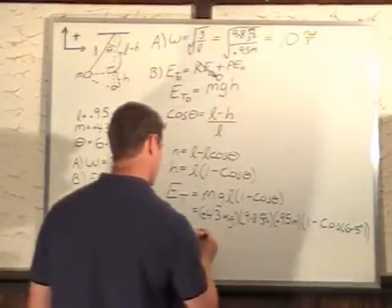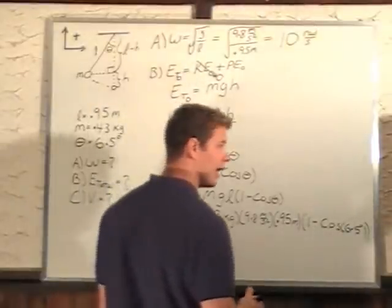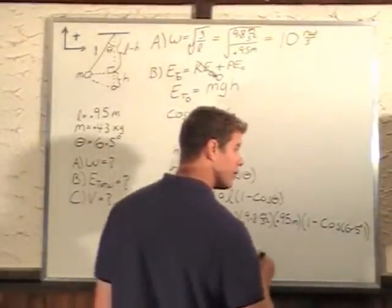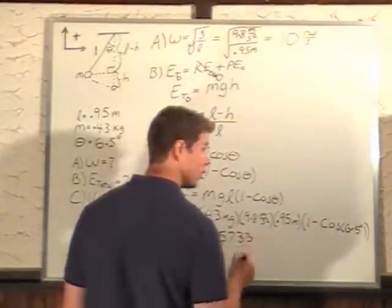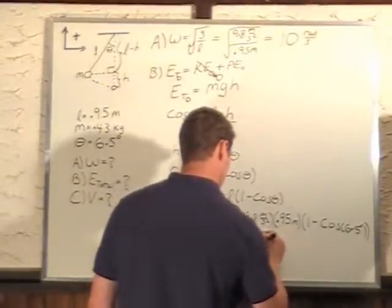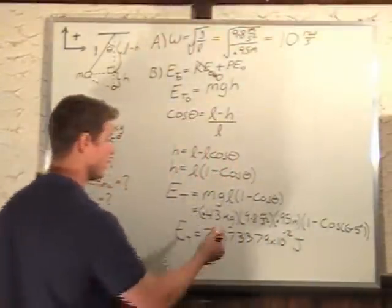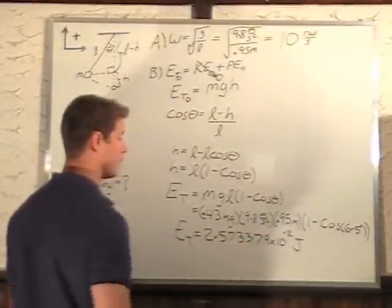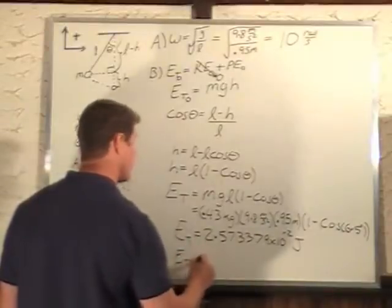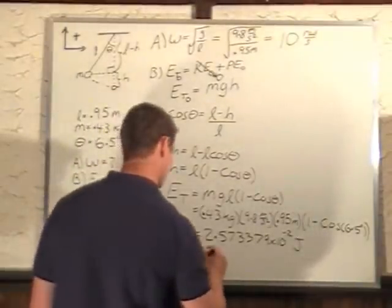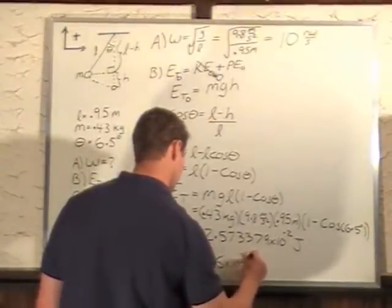If I multiply all this through, I get an answer of 2.573379 times 10 to the minus 2. Our unit is joules because we have kilograms meters squared per second squared. If we round this, we get our total energy equal to 2.6 times 10 to the minus 2 joules to two significant digits.